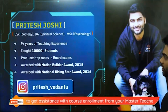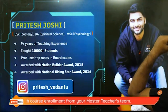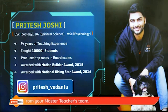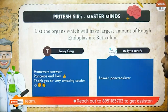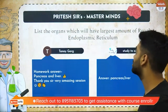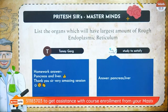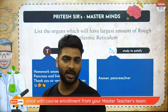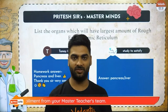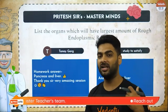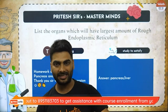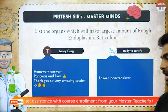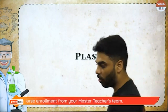Here are the homework answers. I'd asked you the list of organs which have the largest amount of rough endoplasmic reticulum. It is pancreas and liver. The function of the rough endoplasmic reticulum — which is a network from the nuclear membrane to the plasma membrane — is to remove the toxins, drugs, and poisons from the body.